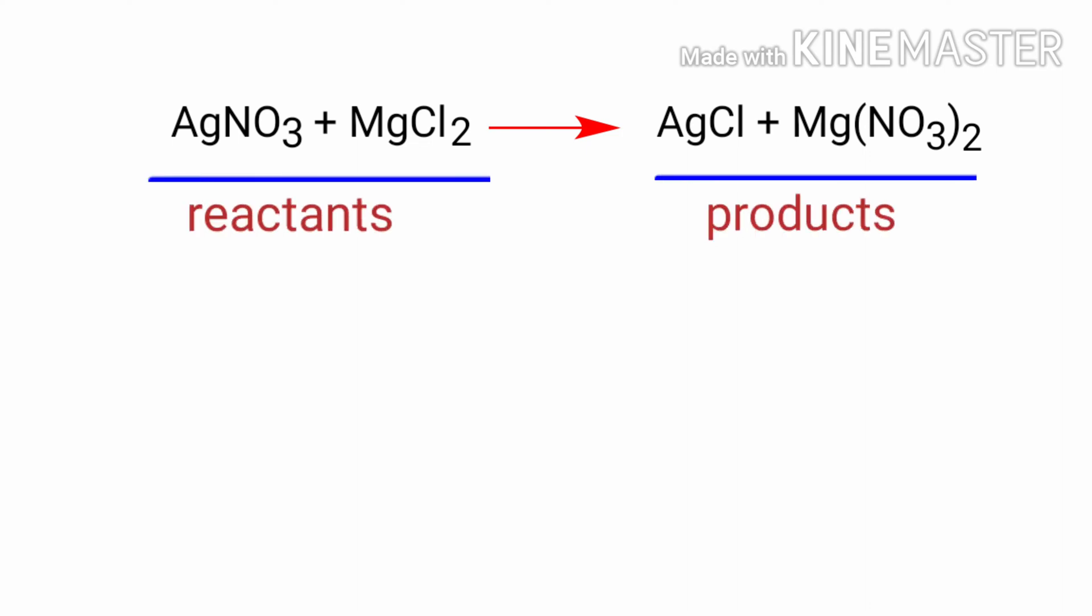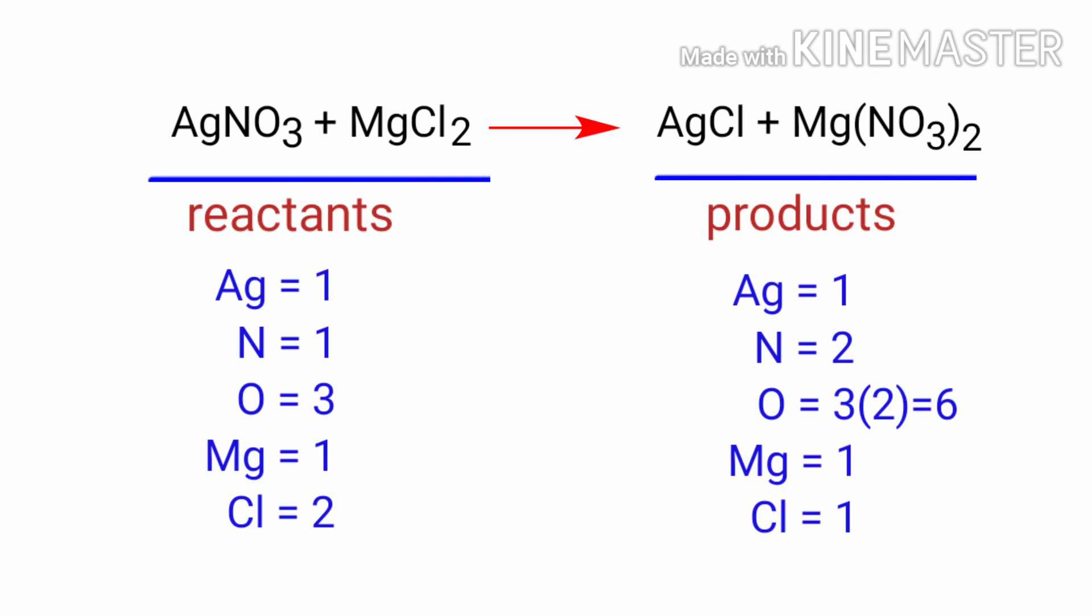In this equation, the reactants are silver nitrate and magnesium chloride, and the products are silver chloride and magnesium nitrate. If you look at this equation, the equation is not balanced.